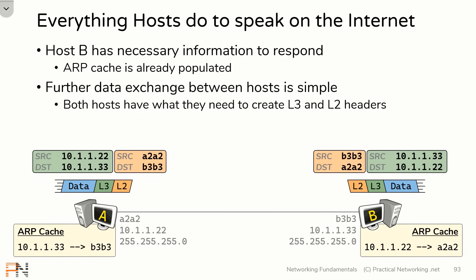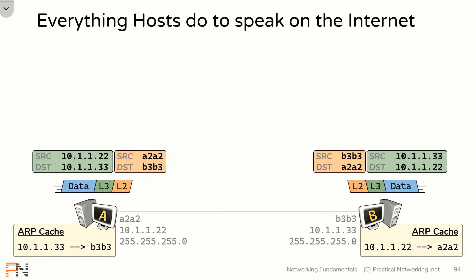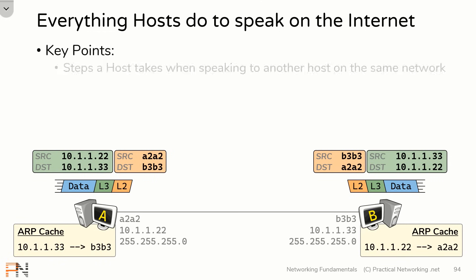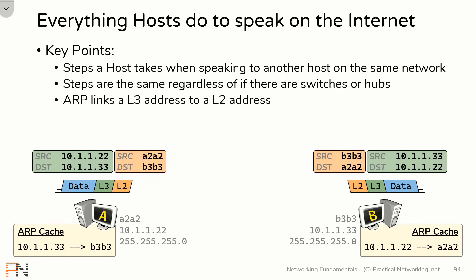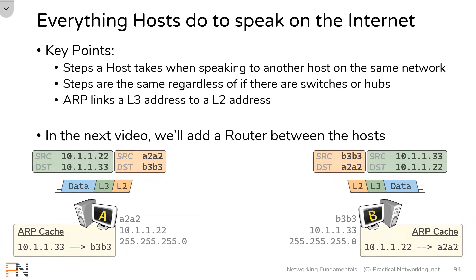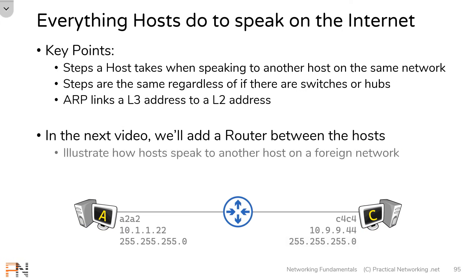That wraps up our lesson on everything hosts do to speak to another host on the same network. The key takeaways of this lesson are: understanding all the steps a host takes when speaking to another host on the same network; understanding that those steps are the same regardless of whether there are switches or hubs in between the two hosts; and finally, understanding ARP and how it works and how it links a layer 3 address to a layer 2 address. In the next video, we're going to add a router between these two hosts to show you how these steps change, illustrating everything a host does to speak to another host on a foreign network.